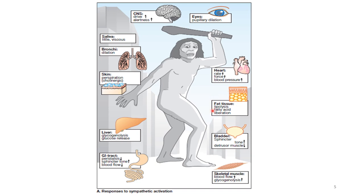Lipolysis occurs in fat and glycogenolysis occurs in skeletal muscle as well as in the liver, supplying oxygen and energy. More blood is supplied by the heart through increased force of contraction and heart rate. There is also increased hold on the bladder and defecation via the sphincter — increased sphincter tone and relaxation of the detrusor muscle of the bladder.